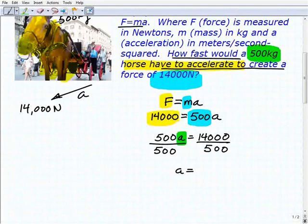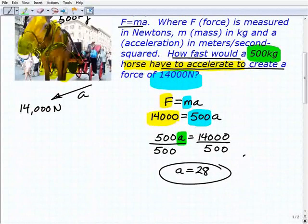So, if you haven't done that already, you want to go ahead and grab your calculator. 14,000 divided by 500 is equal to 28. But 28 what? Well, 28 represents acceleration. So, you always want to use the proper units of measure. So, that would be 28 meters per second squared.